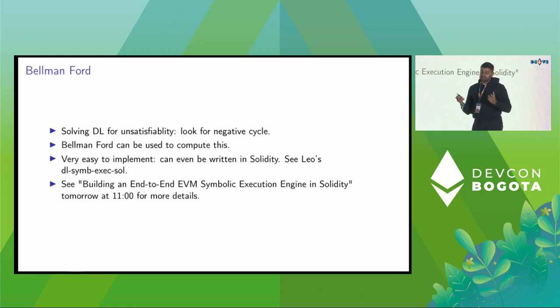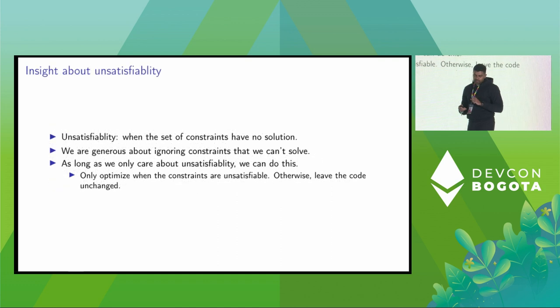How do we find negative cycles in a graph? There is this very classical algorithm called the Bellman-Ford, which can tell you, given a directed graph, is there a negative cycle? You can also use it to find the shortest path between two nodes. That's the classical use case. But it can also tell you if there's a negative cycle. And it's surprisingly easy to implement. You can even implement this in Solidity. Leo has a repo where he implements the Bellman-Ford and much more completely in Solidity. He's going to have a talk tomorrow at 11 a.m. You can come for the talk for more details.